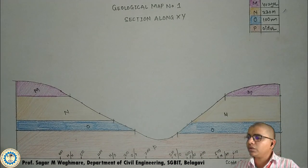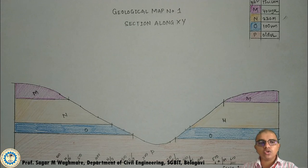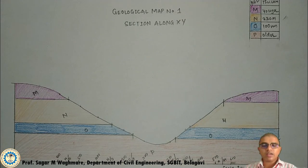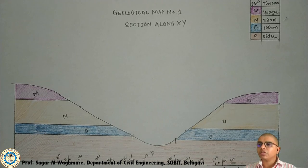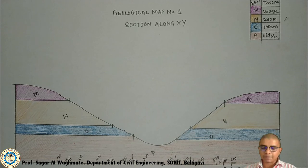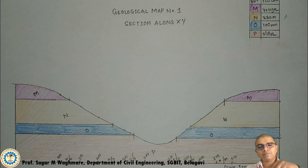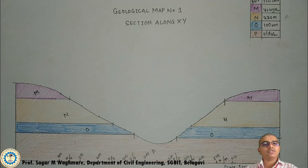Once you complete coloring, you will see the map in its final form — this is how the map should look. This is the first map, which is a horizontal bed map. We will study a few more maps for better understanding and application. I thank you all. I request everyone to practice this — you can get a copy of this map from my website; the link is in the description. Download the map, print it out, and practice everything. If you have any problems, feel free to contact me. Thank you.